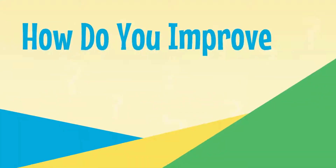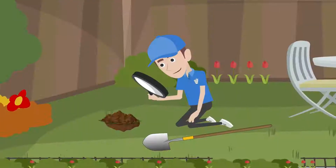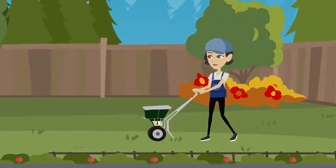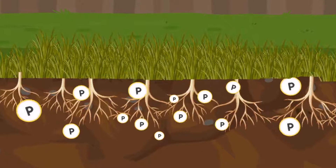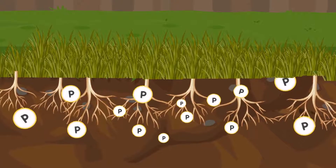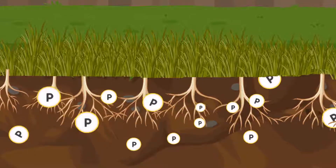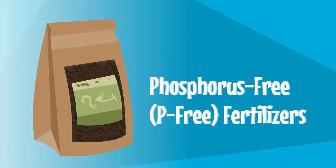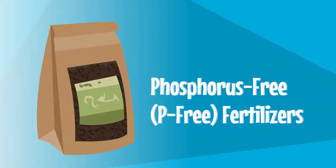How do you improve soil fertility? Have your soil tested. Only use the type and amount of fertilizer needed. Most soils in Iowa already have enough phosphorus. Use phosphorus-free, phosphate-free fertilizers on established lawns.